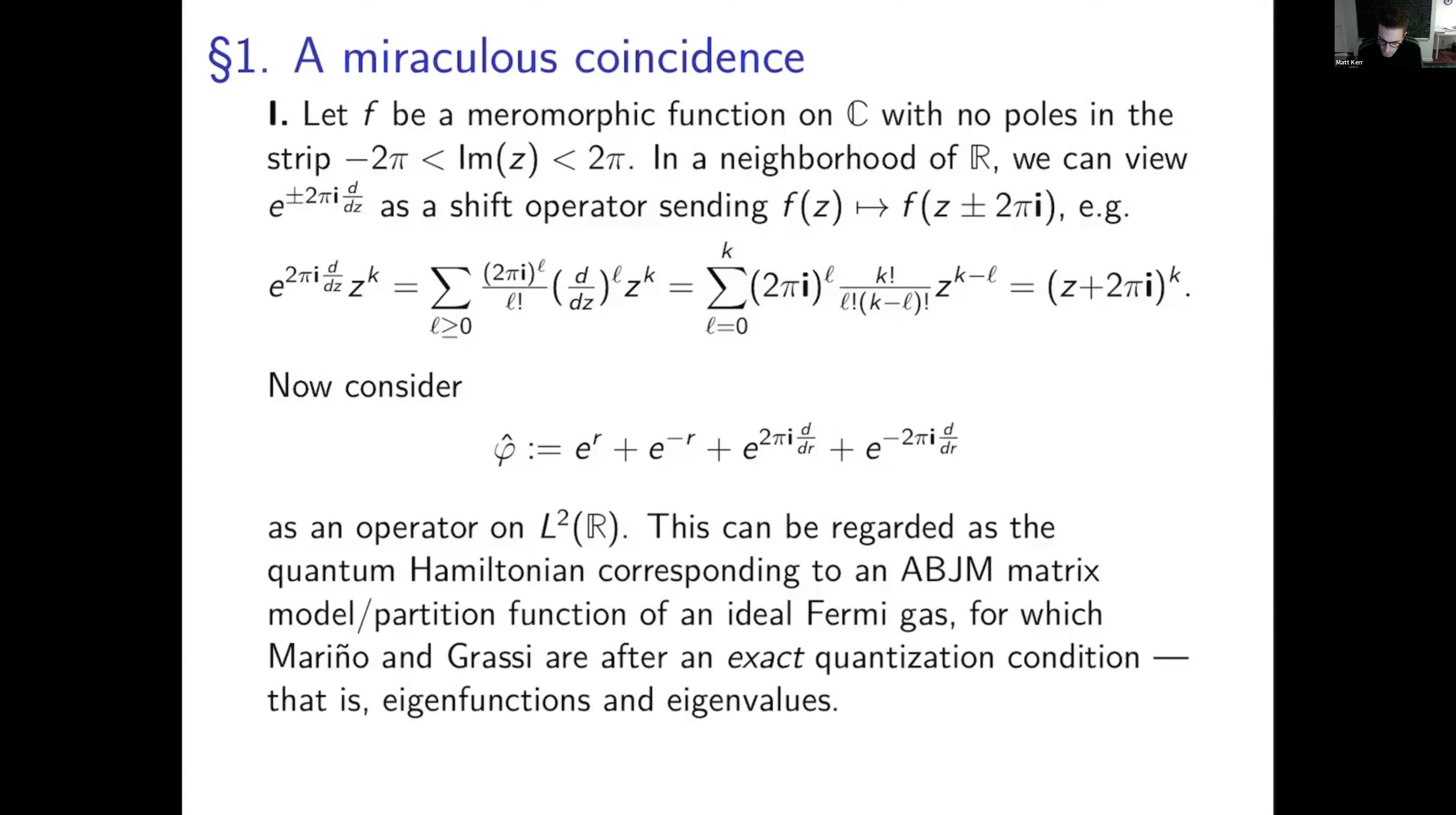And Mourinho and company were after an exact quantization condition. Normally one would write h bar in place of 2 pi and write everything in an asymptotic expansion in h bar, but they don't want to do that. They want to know the exact answer as sort of a function of h bar, and in particular, in this case, at 2 pi. Normally in those exponentials, one would have h bar i instead of 2 pi i.